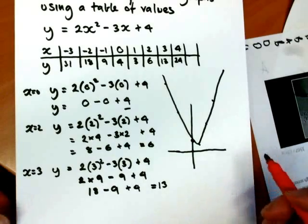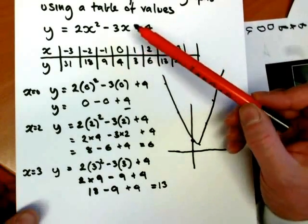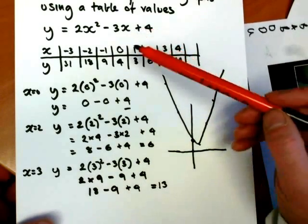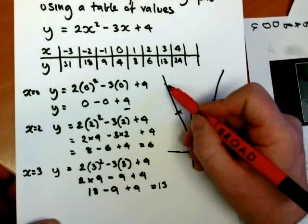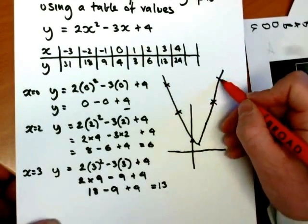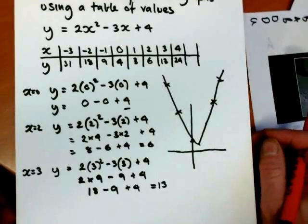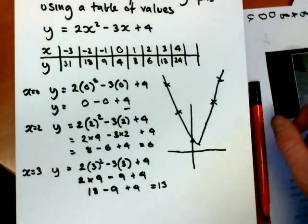What I've tried to show you here is how you substitute values for x, one at a time, to find the y coordinates. And then the follow-up would be to plot your graph. That's how to draw a quadratic graph using a table of values.